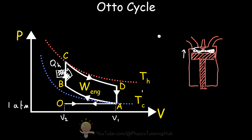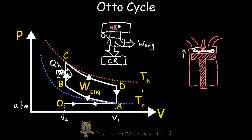We can draw a heat engine here to represent what is happening during this process: the hot reservoir supplies heat QH to the engine, the engine converts some of this heat into work, and dumps the remaining heat out into the cold reservoir.